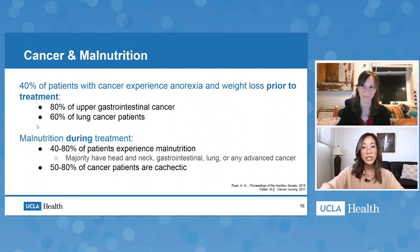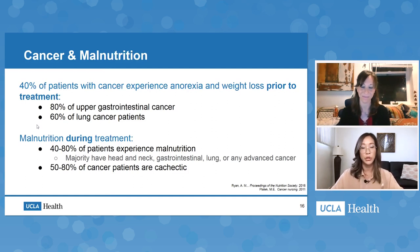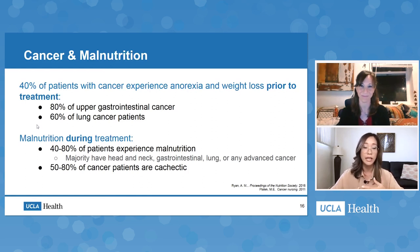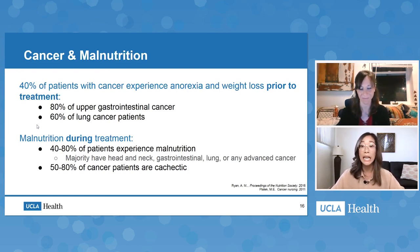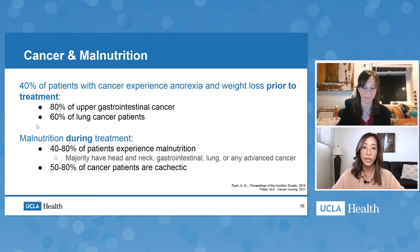Now let's really hone in on cancer and malnutrition. We know it's widely prevalent in our oncology population — studies show as many as 80% of upper GI and up to 60% of lung cancer patients experience significant weight loss at the time of diagnosis. We know malnutrition is widely prevalent during the treatment course, with additional support suggesting 50 to 80% of patients are cachectic at some point during care. This means eight out of ten of our GI patients will fit this definition.